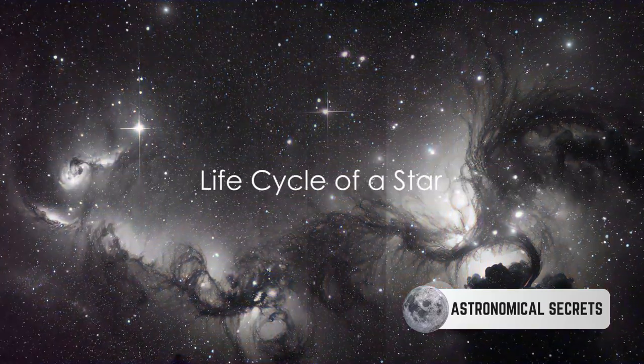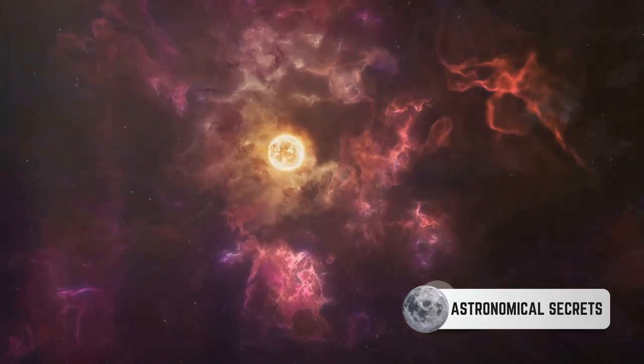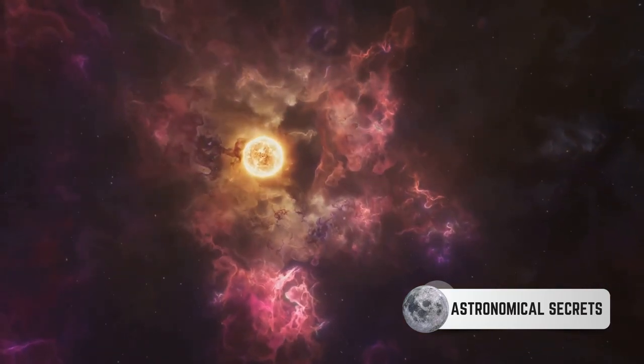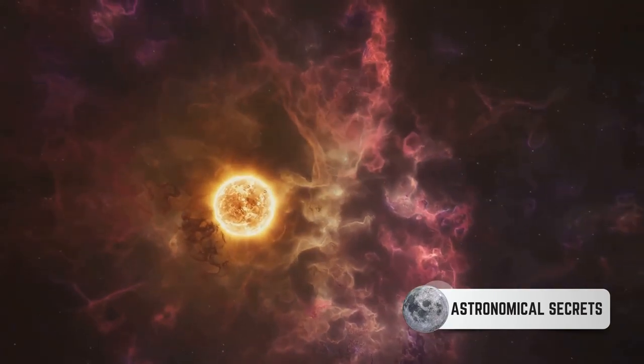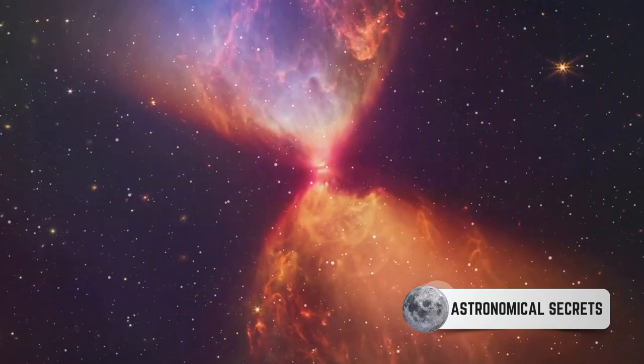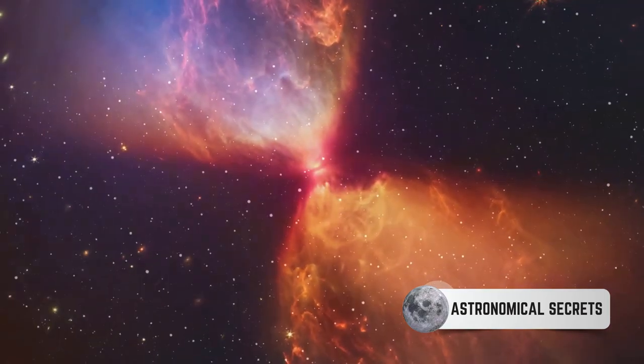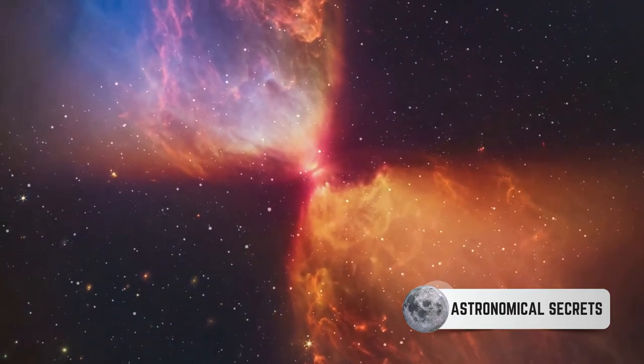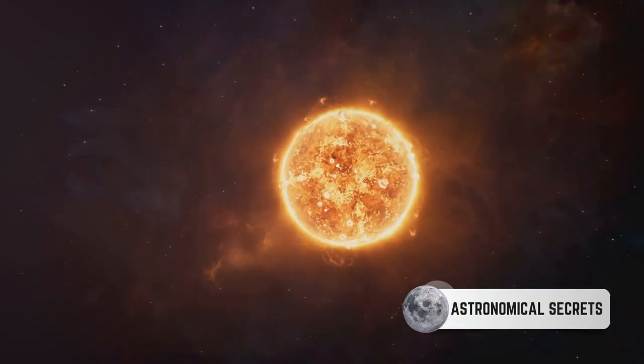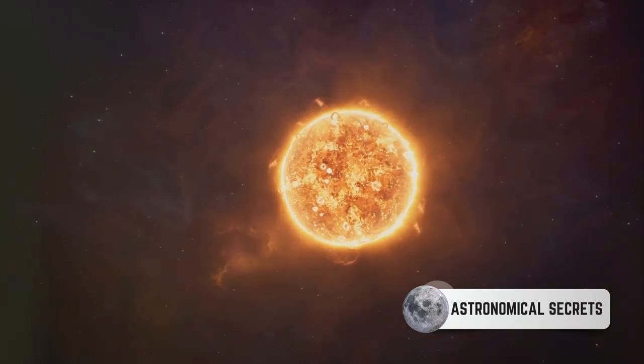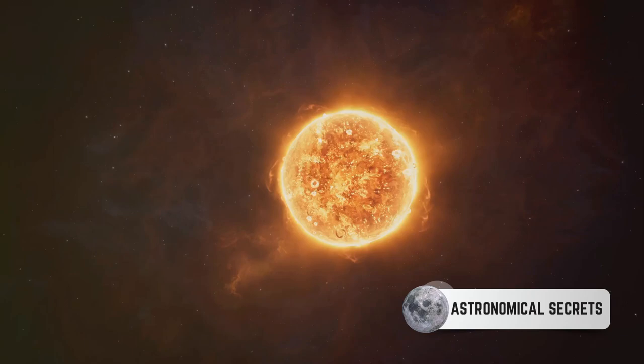Understanding HII regions also means understanding the life cycle of a star. What is the life cycle of a star, you may ask? Well, it starts with a dense cloud of dust and gas, often within an HII region. As gravity pulls the particles together they begin to spin, forming a protostar. This is a star's infancy where it's mostly a ball of hydrogen and helium enveloped by dust. As the protostar continues to gather mass, its core temperature rises, igniting nuclear fusion.